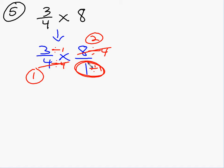So now I'm ready to multiply across. I have 3 times 2, which is 6. And I have 1 times 1, which is 1. So my answer is just 6.